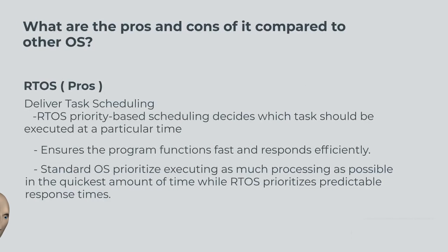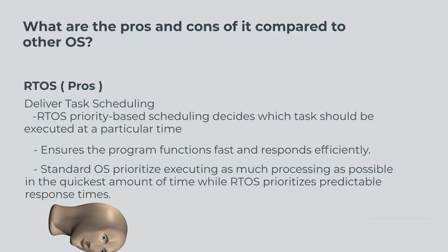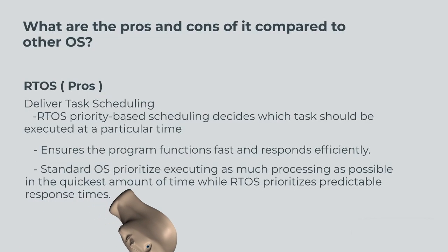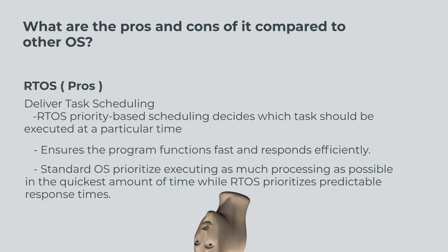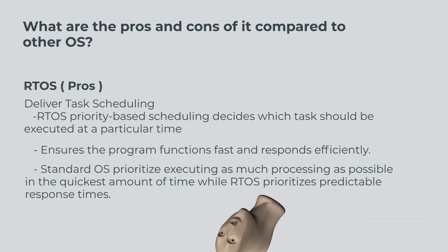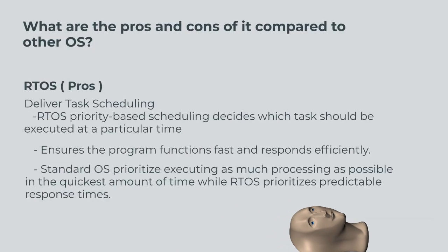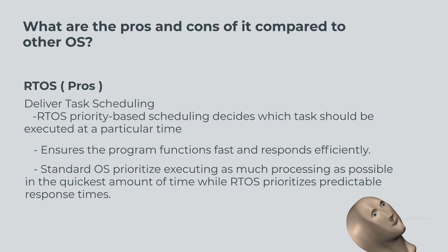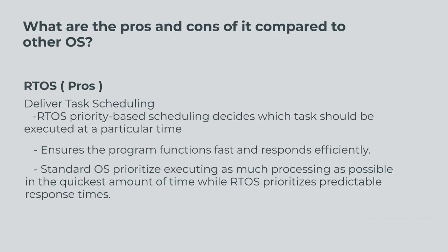What are the pros and cons compared to other OS? RTOS pros: task scheduling. RTOS priority-based scheduling decides which task should be executed at a particular time, ensuring the program functions fast and responds efficiently. Standard OS prioritize executing as much processing as possible in the quickest amount of time, while RTOS prioritizes predictable response times.